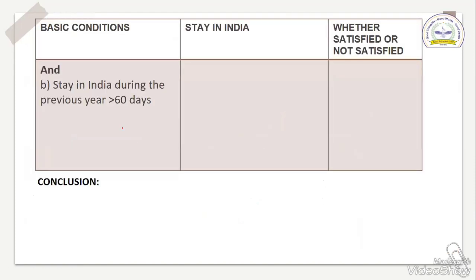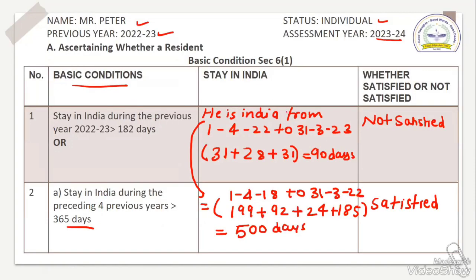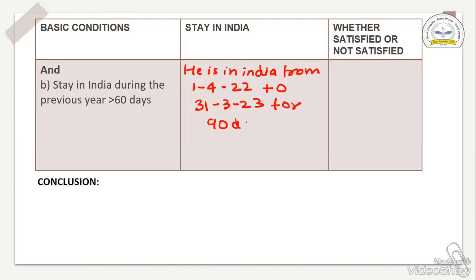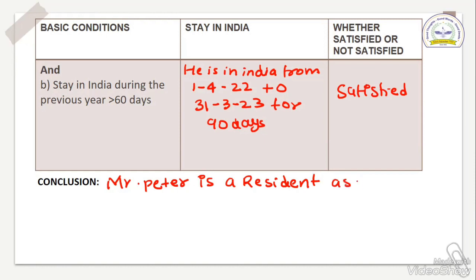Now the second part of condition two: stay in India during the previous year for 60 days. He is in India from 1/4/22 to 31/3/23 for 90 days. Since 90 days is more than 60 days, he is satisfying the second condition. So our conclusion: Mr. Peter is a resident as per condition 2.